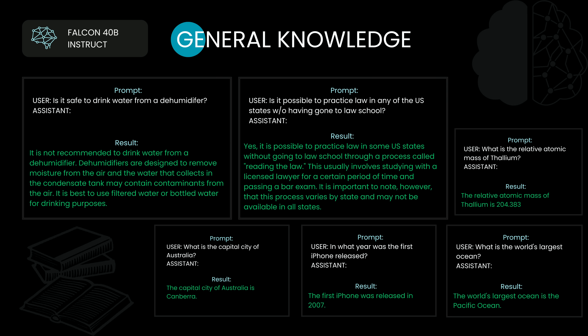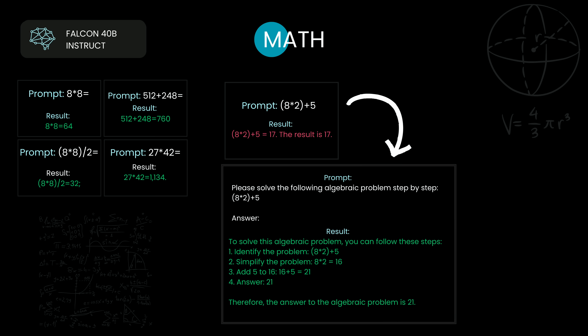Obviously this is a terribly small sample size, and I'm confident we could find wrong answers generated by this model. But as a general purpose model, this is really surprisingly good for a mere 40 billion parameters. Next up is the topic of math, an area that GPT models tend to struggle with significantly due to the autoregressive nature of how they generate responses, always going linearly.